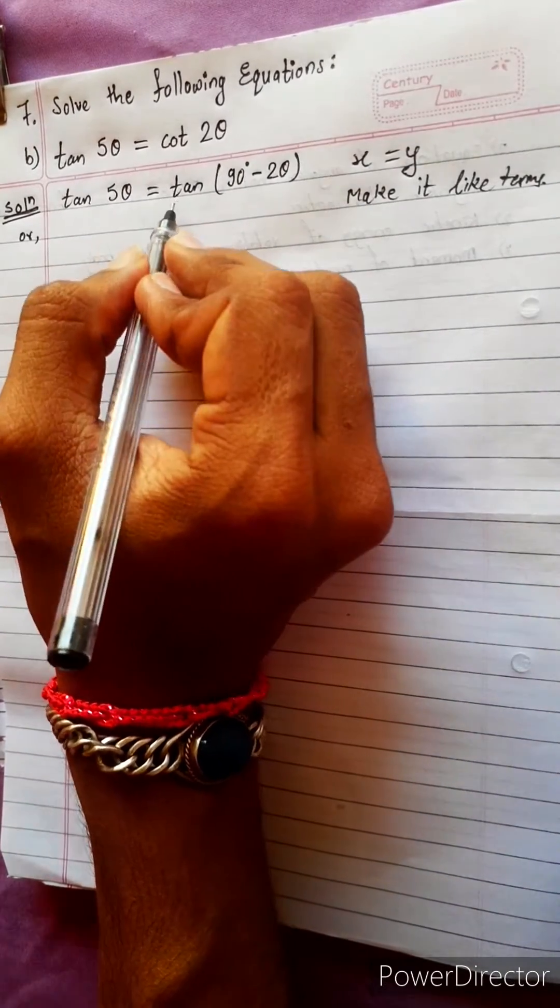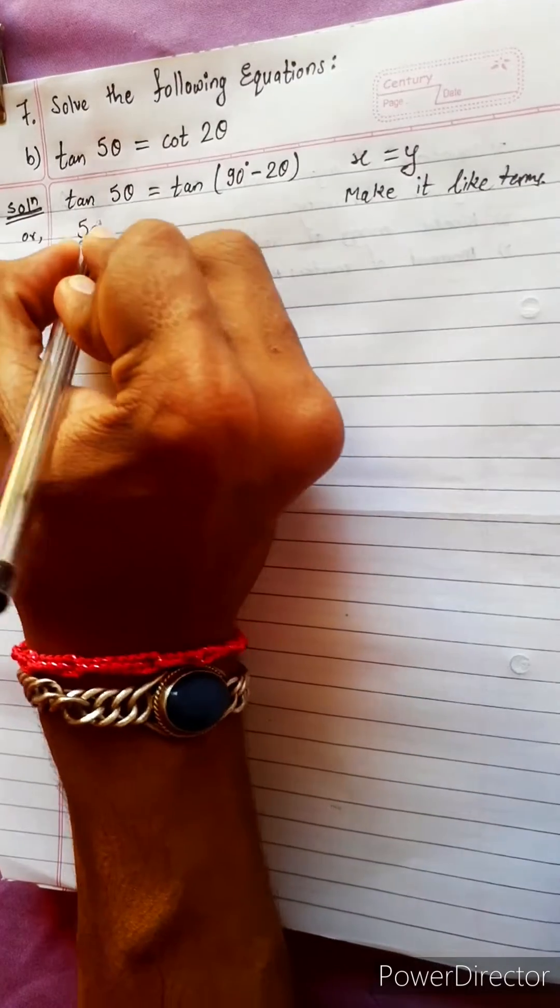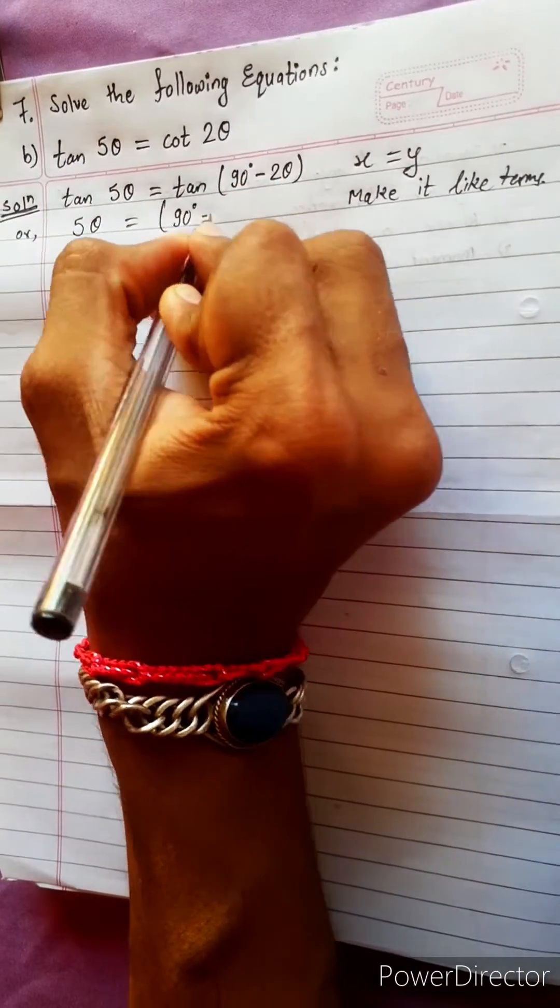If you cancel, you will get. Tan will cancel equals to 90 degree minus 2θ.